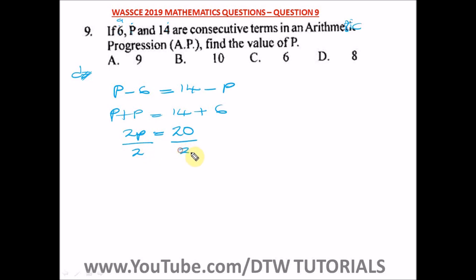2 will cancel out. How many times will 2 go into 20? It will go 10 times. So P is equal to 10. Our answer is P equals 10 and our right option here is option B.